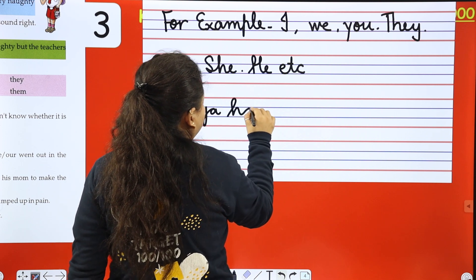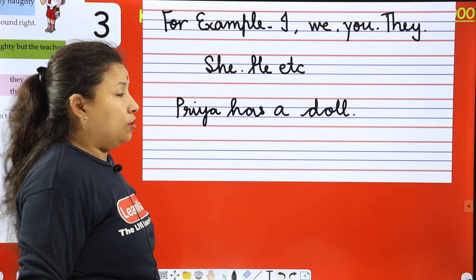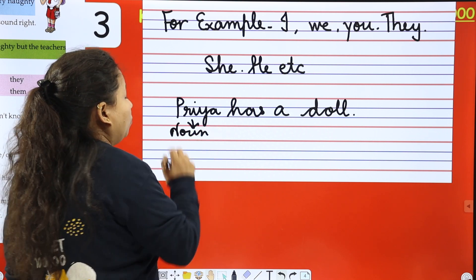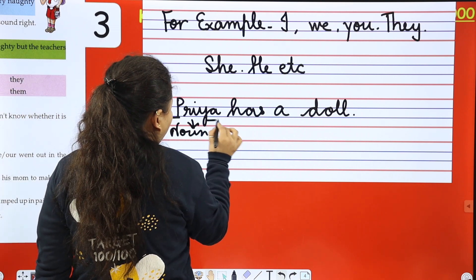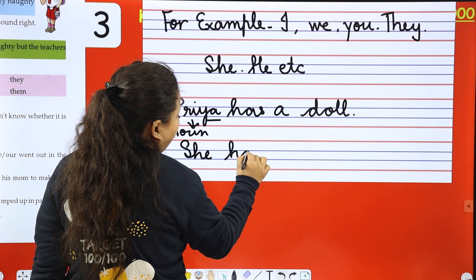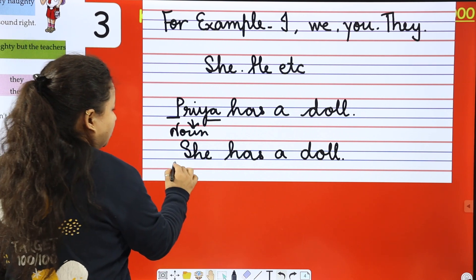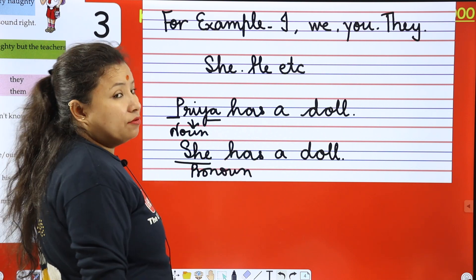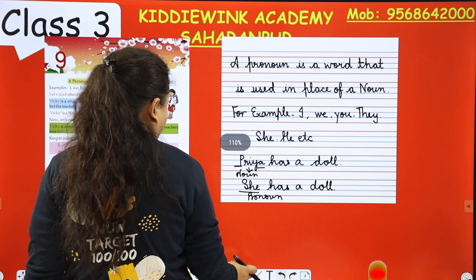For example: 'Priya has a doll.' Here, Priya is a noun or subject. A pronoun is used in place of a noun, so now I am going to use 'she' in place of Priya: 'She has a doll.' Priya is female, so we use 'she'.